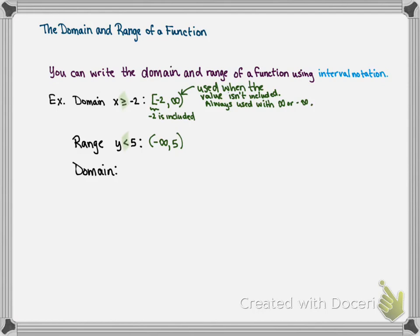Let's look at another domain. The domain is negative 2 is less than or equal to x is less than 8. The smallest value that x can be is negative 2 — it's included because we have an equal bar, so x can equal negative 2. The largest value of x is 8, but it's not included. So the 8 gets a curved parenthesis because there is no equal bar with the inequality symbol.